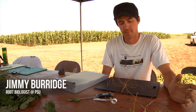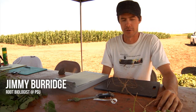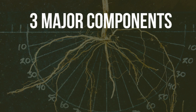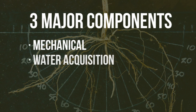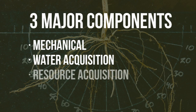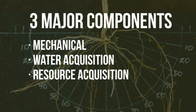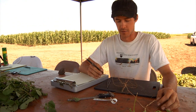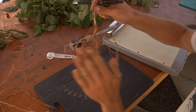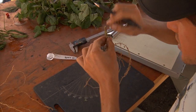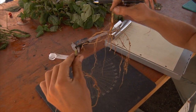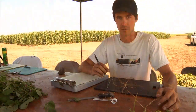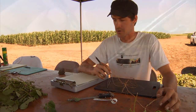To give a very brief and coarse introduction to why roots are important for any crop, there are three major components: the mechanical component, water acquisition, and resource acquisition. Everyone is more or less aware of these, but people generally don't think of them very much because it's underground and hard to see. We're trying to investigate roots more vigorously and determine what traits are associated with better water acquisition, nutrient acquisition, or mechanical support.